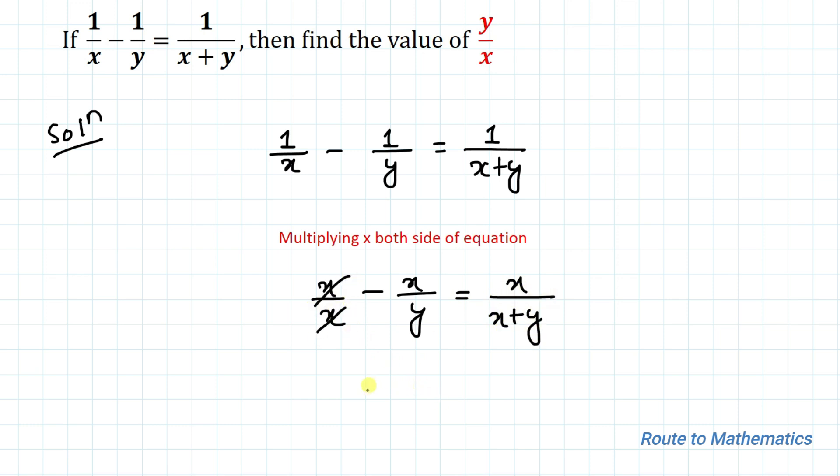Here x and x get cancelled out, so we have 1 - x/y = x/(x+y).